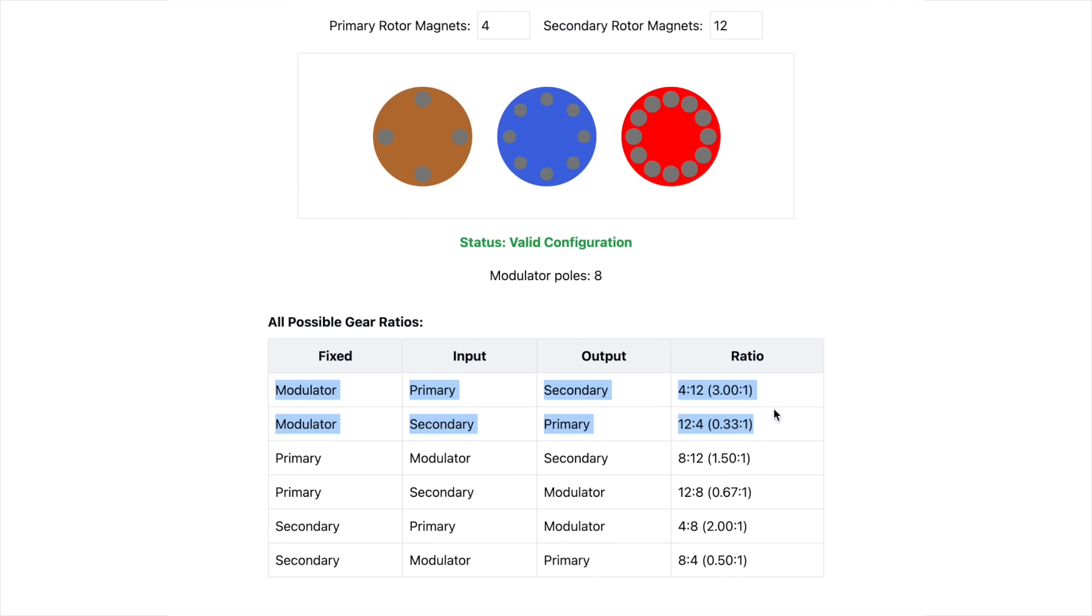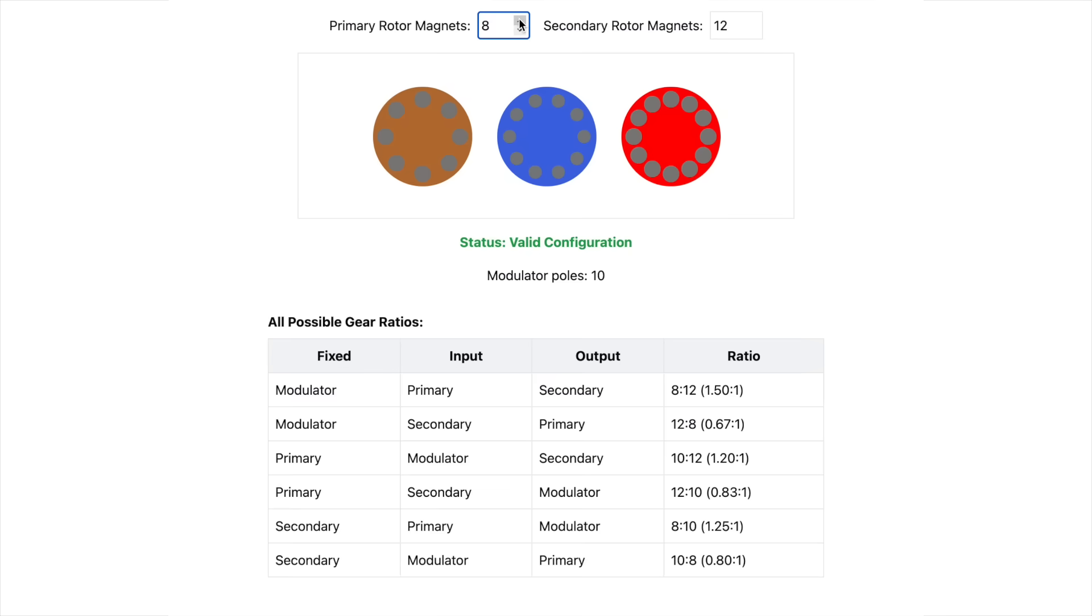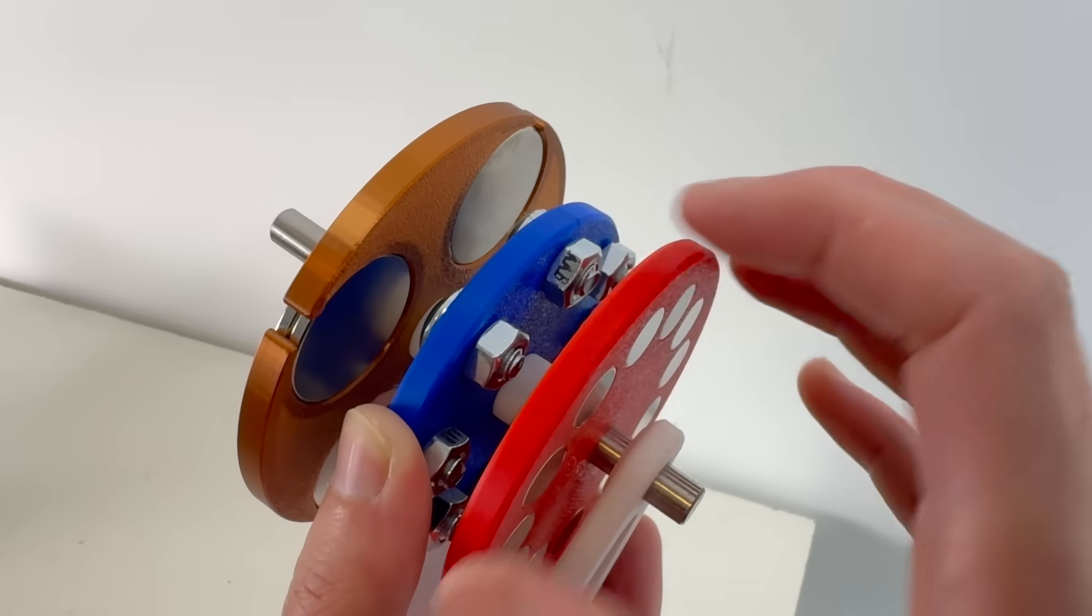If you really want to dig into the details and see all of the exact gear ratios, check out this table here. And the table automatically updates when you change the number of magnets on each gear. But it still doesn't answer exactly how the gears actually work.